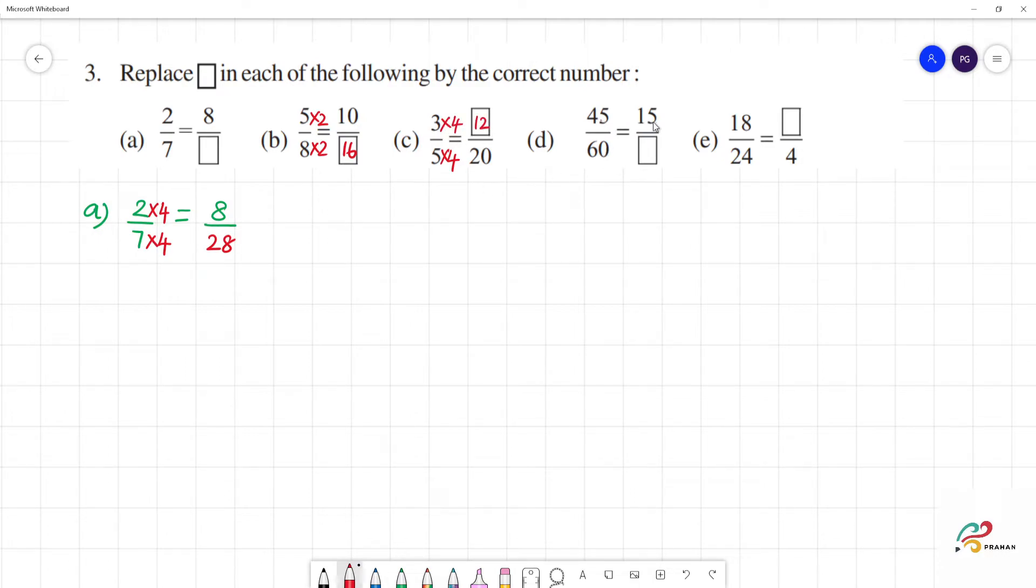Next, 45 by 60. This multiplication means the number. Then, 45 divided by 3 is 15. Then, here, 60 divided by 3 is 20. Okay?